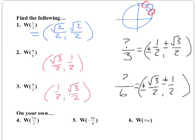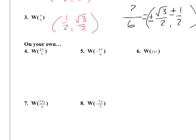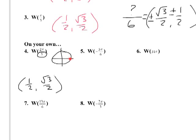Let's try W(2π/3). Since there's a 3 in the denominator, I start with coordinates (1/2, √3/2). Then I figure out where 2π/3 is on the unit circle — it's two-thirds of the way to π, which puts us in the second quadrant. So the answer is (-1/2, √3/2).